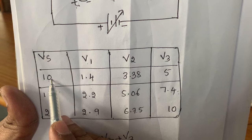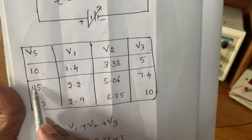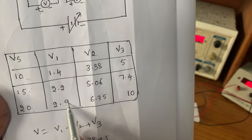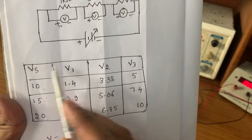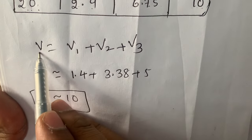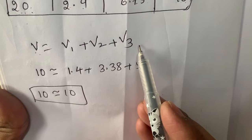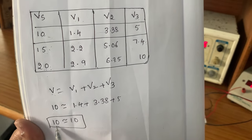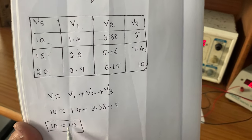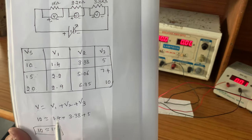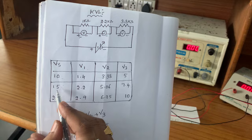This is the tabular column: supply voltage 10 volts with V1, V2, V3 values; for 15 volts: 2.2, 5.06, and 7.4 volts; for 20 volts: 2.9 volts, 6.75 volts, and 10 volts. According to Kirchhoff's Voltage Law, total voltage equals the sum of individual voltages: V = V1 + V2 + V3. At 10 volts supply, adding V1 + V2 + V3 gives approximately 10, so KVL is verified at 10 volts. Similarly, at 15 volts and 20 volts, you will get the same result. This is the verification of Kirchhoff's Voltage Law at 10 volts, 15 volts, and 20 volts.